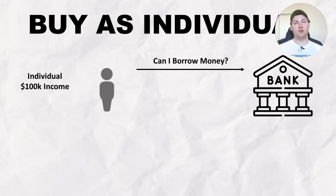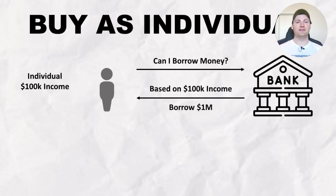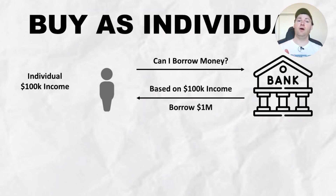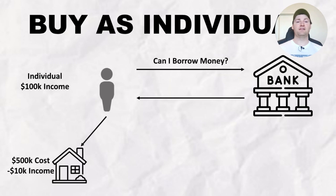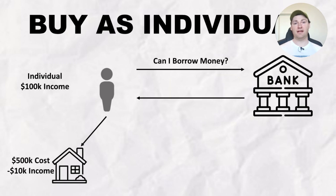So as an individual, let's say you have $100,000 of income — which we'll use as standard throughout this video. The first point of call is to ask the bank: can I borrow some money? The bank will look at your assets, liabilities, and income. You say no assets, no liabilities, income of $100,000. To keep things simple, the bank in this example will say: you have $100,000 of income, therefore you can borrow $1,000,000. Using that, you go to the property market and find a property valued at $500,000 — a negatively geared piece of real estate that costs you $10,000 from your pocket after all expenses.